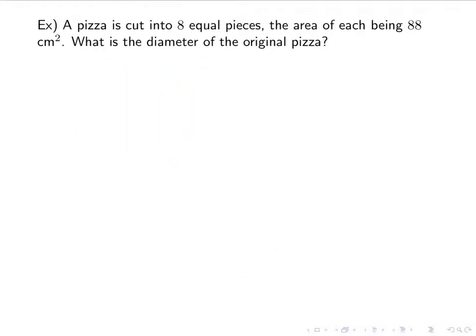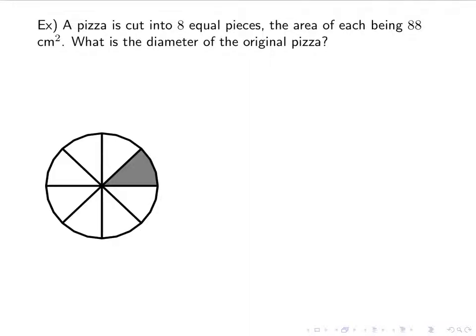We'll do one more word problem. A pizza is cut into 8 equal pieces, the area of each being 88 cm². What is the diameter of the original pizza? First I'm going to draw our picture: a circle cut into 8 pieces, and we're looking at the area of one slice. In order to find the diameter, we need to find the radius. To find the radius, I need to know the area, which I have, and also the angle. So I need to find θ first. θ is 1/8 of the circle because we've cut it into 8 pieces. The full circle is 2π, so 1/8 of 2π is π/4. We're looking at an angle of π/4 radians.